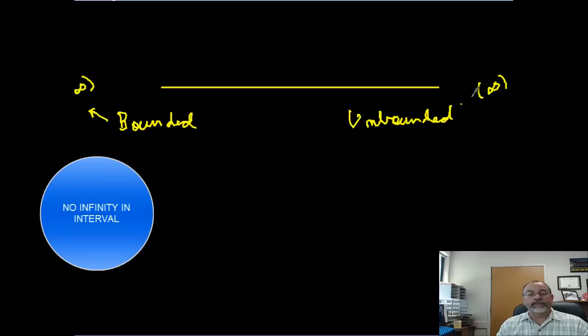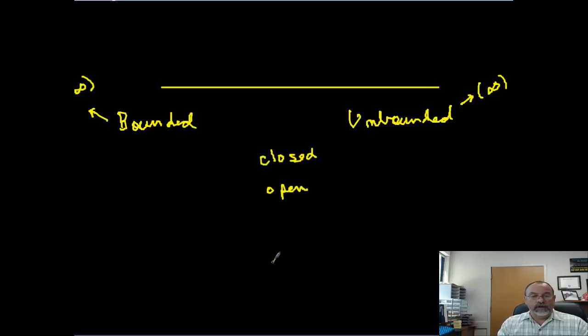Unbounded intervals are where infinity is involved. And actually, we only have three types. We have what we call a closed interval, an open interval, and then we have what we call half-open intervals. And this applies to both. Well two of them apply to both. One doesn't. So a bounded interval can be closed, a bounded interval can be open, or a bounded interval could be half-open.